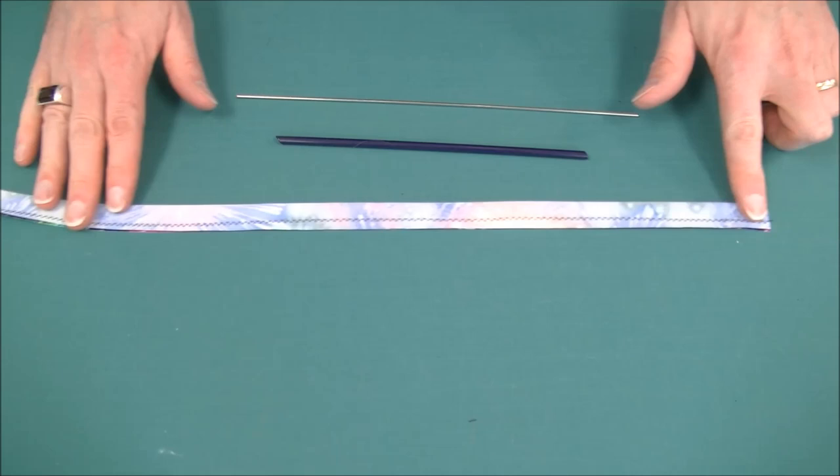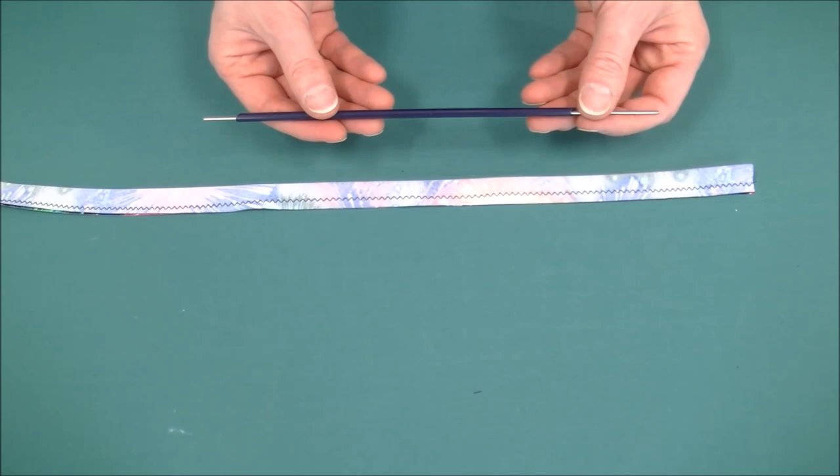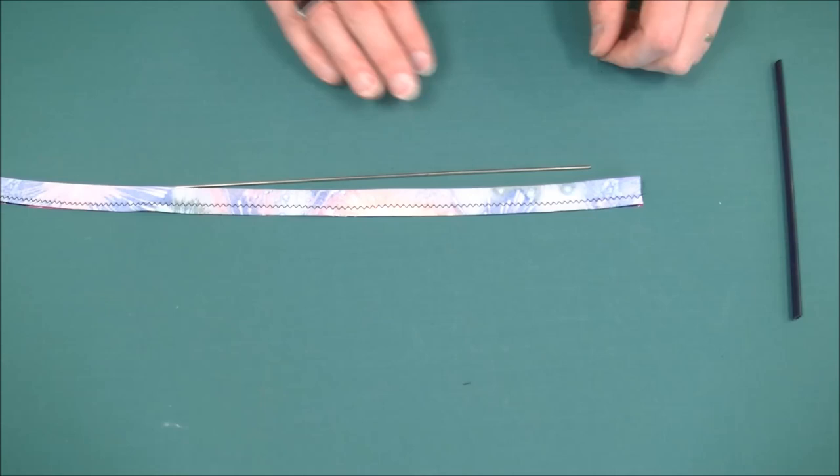Another way of turning the strap is to use this little tube. They come in sets with different sizes but for this narrow strap we're using the smallest piece.